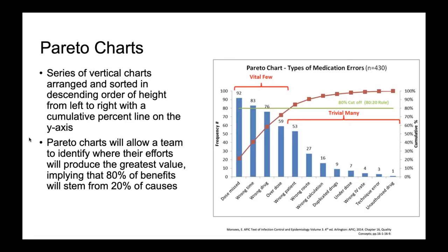Pareto charts are amazing — they're my favorite. Pareto charts are a series of vertical charts arranged and sorted in descending order of height from left to right with a cumulative percentage line on the y-axis. Pareto charts will allow a team to identify where their efforts will produce the greatest value, implying that 80% of the benefits will stem from 20% of the causes. When you're focusing on the example shown — types of medication errors — you're going to get your biggest bang for your buck if you focus on doses being missed, wrong time of administration, wrong drug, and overdose. That's what you want to be focusing on for education and awareness, because that's what's going to bring you the greatest amount of benefits.